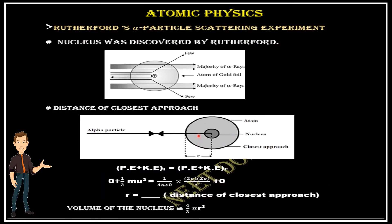Up to a certain extent it has traveled, and by that distance it has moved back — it did not travel further. There is a certain distance close to the nucleus, and finding this distance is called the distance of closest approach. To find it, we use the law of conservation of energy: potential energy plus kinetic energy initially equals potential energy plus kinetic energy finally.